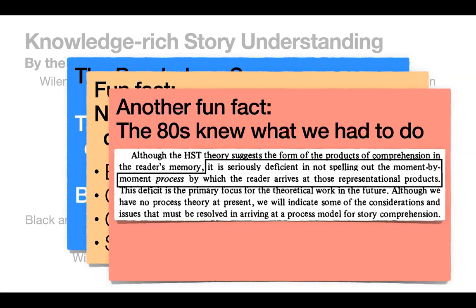Another fun fact: the 80s knew what they were talking about. Brown and Black talked about how that hierarchical problem-solving theory, while it could explain some of the data observed in experiments, was deficient in the sense that it's not spelling out the moment-to-moment process by which the reader arrives at those representational products. And ultimately that's what I was talking about at the very beginning - we still don't know at a computationally precise process level what is actually manipulating all those structures.